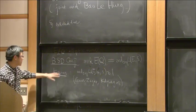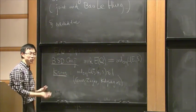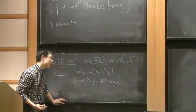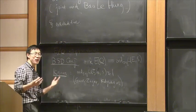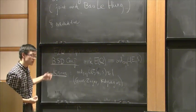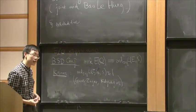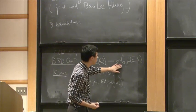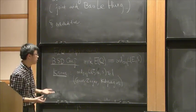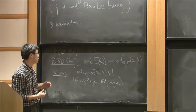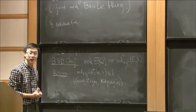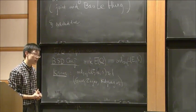Beyond knowing this conjecture — the identity between algebraic rank and analytic rank — there is actually a more remarkable original conjecture of Birch and Swinnerton-Dyer, predicting the leading coefficient of the L-function at s equals 1, which contains various arithmetic invariants of the elliptic curve.